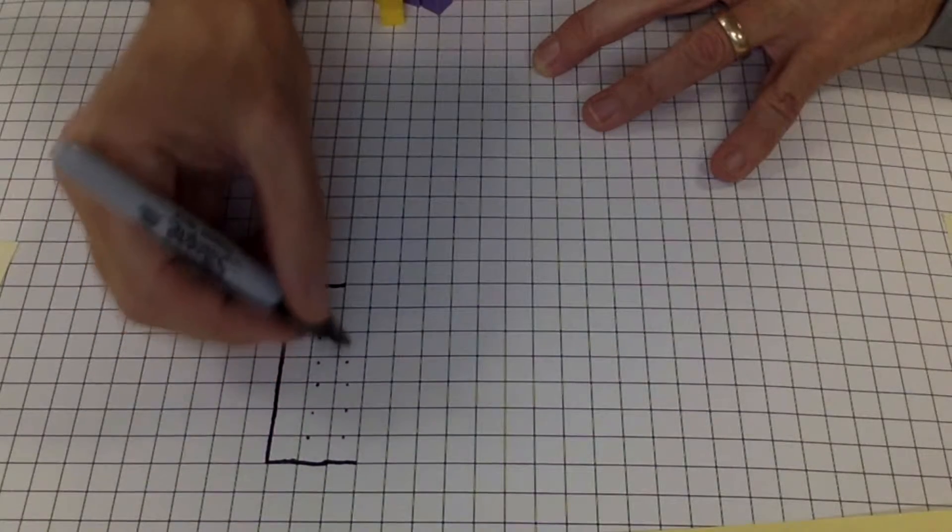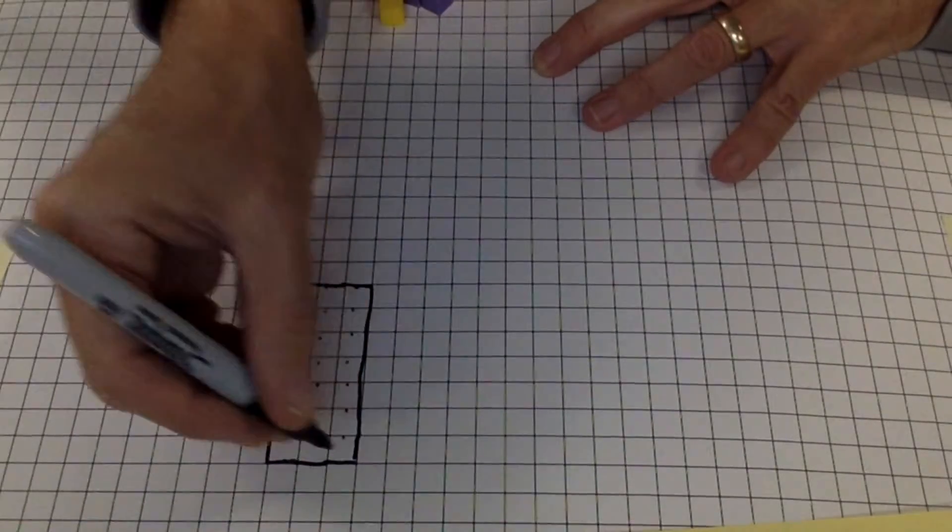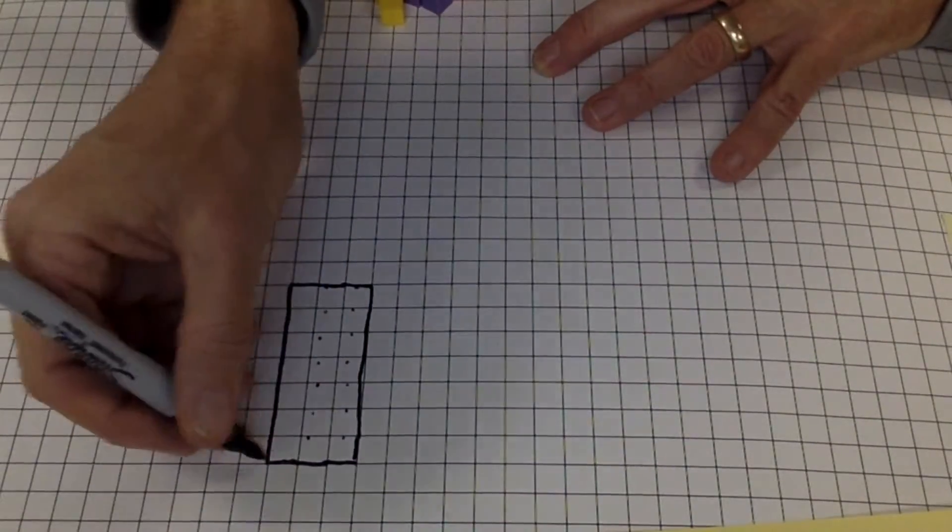15, 16, 17, 18, 19, 20, 21. There's my 21. I have rows of 7. I have 3 columns.